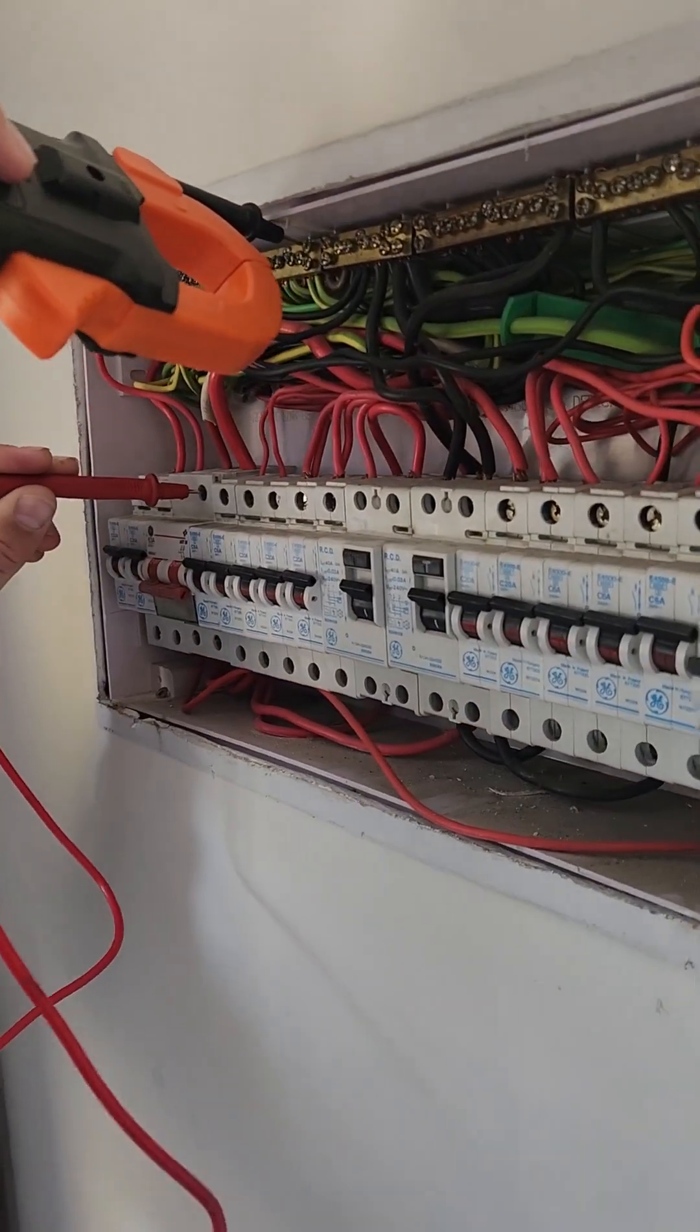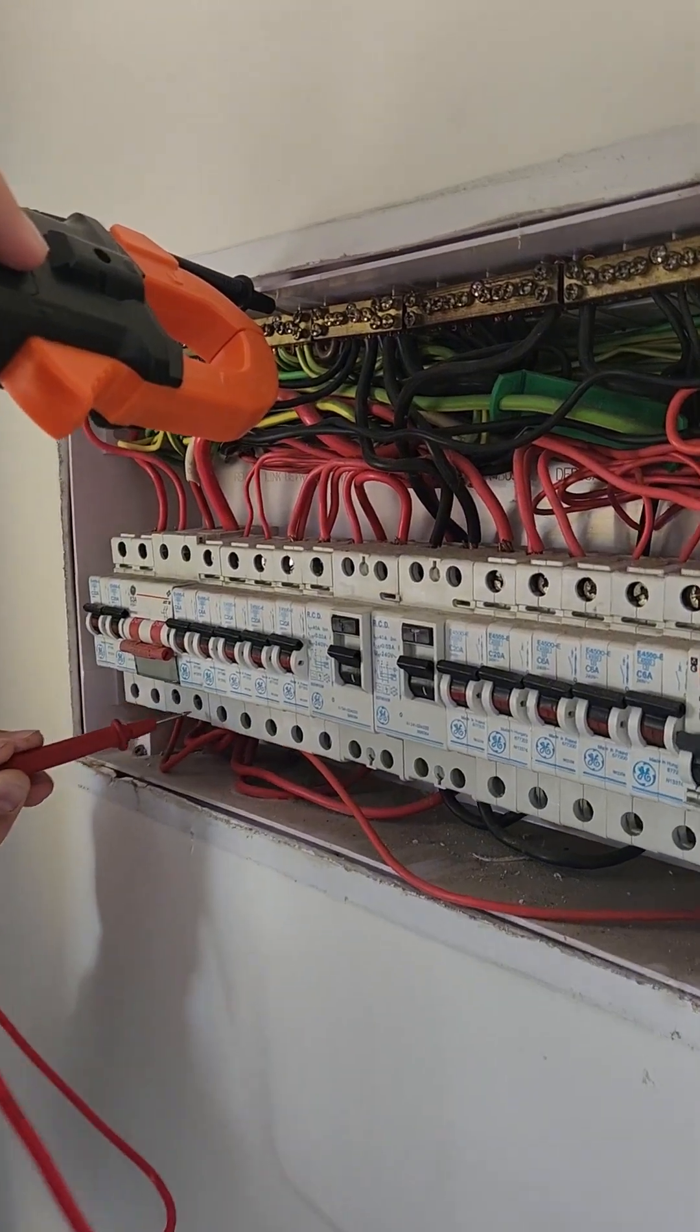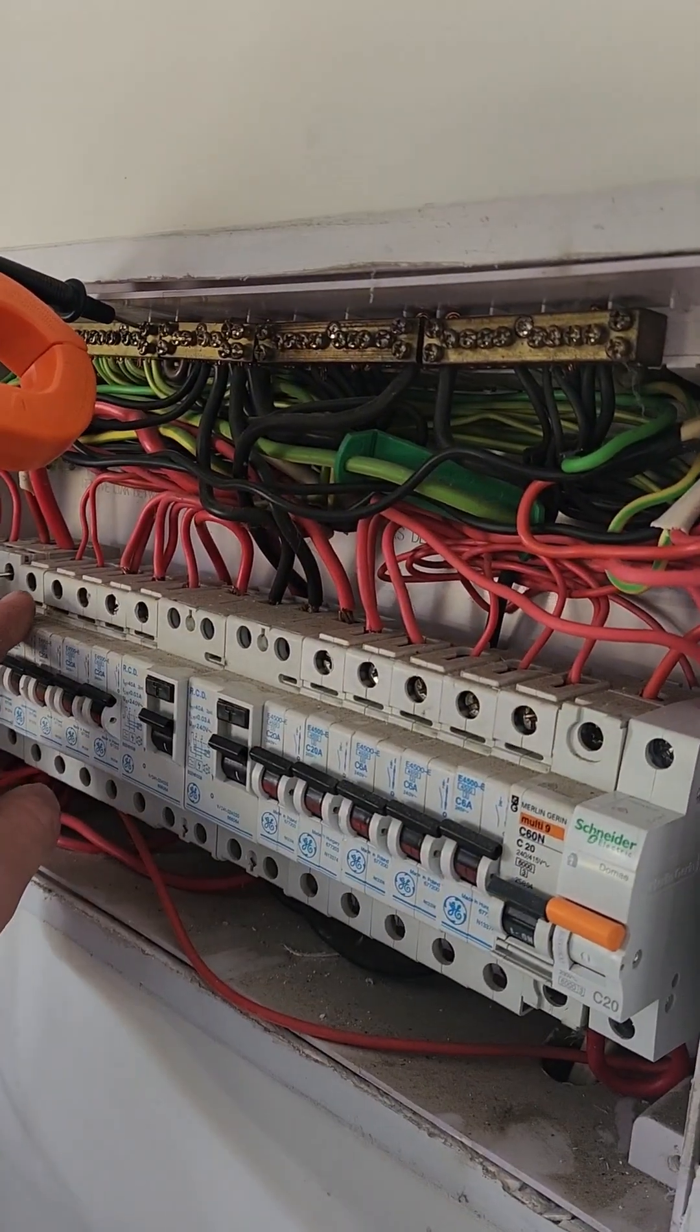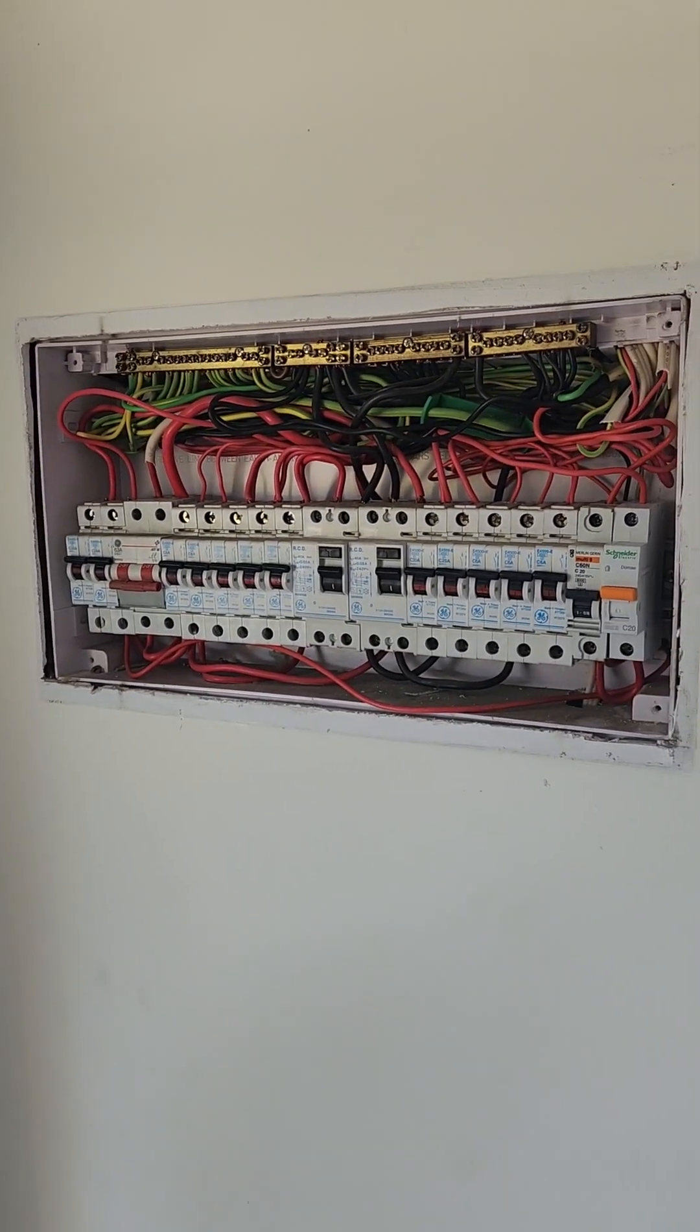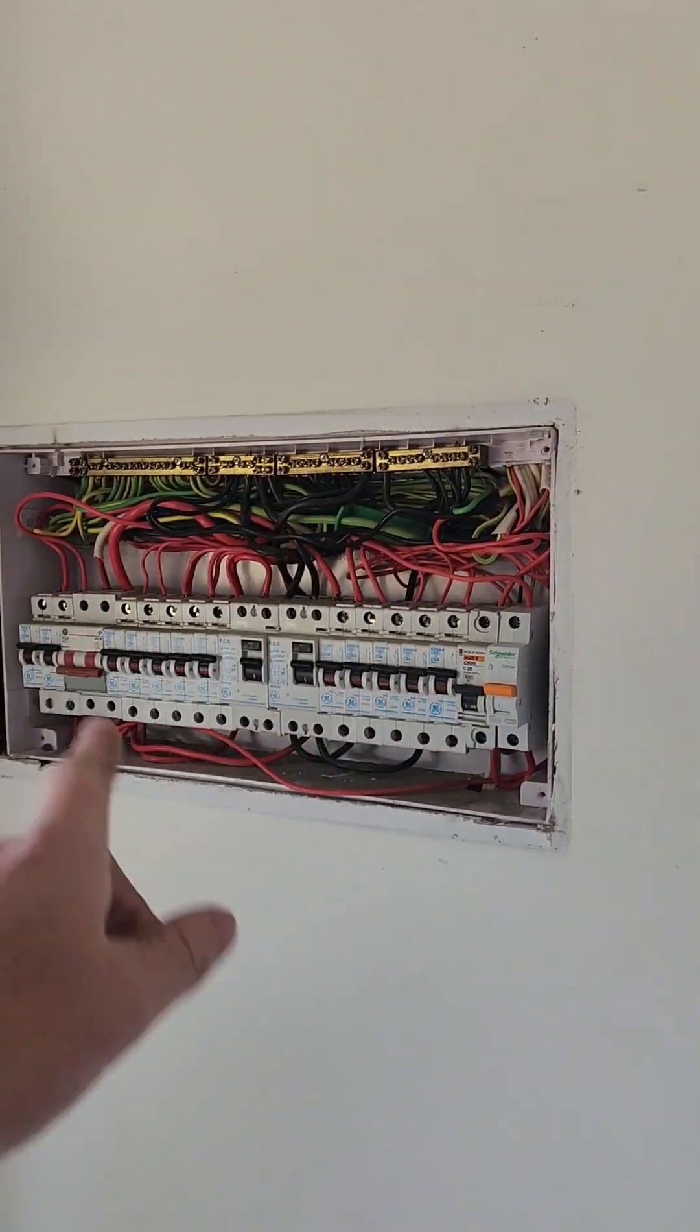Now Snipey's just double checking that everything's dead. It should be but test proof test. What we'll do here is we'll label all the breakers, all the wires out of the breakers as to what they are so we can put them into their new breakers. Then we'll rip the board apart, make a bigger hole, put the new board in, put all the wires into the right spots.